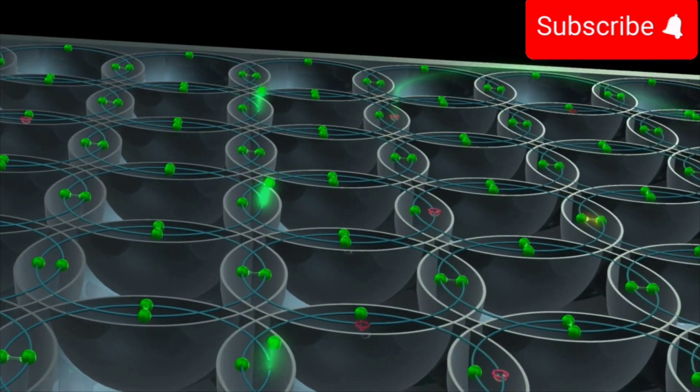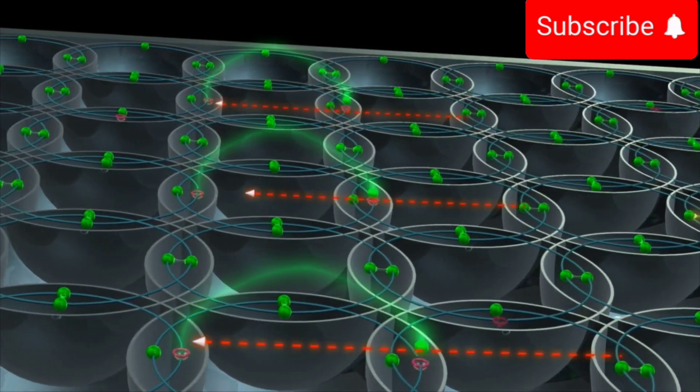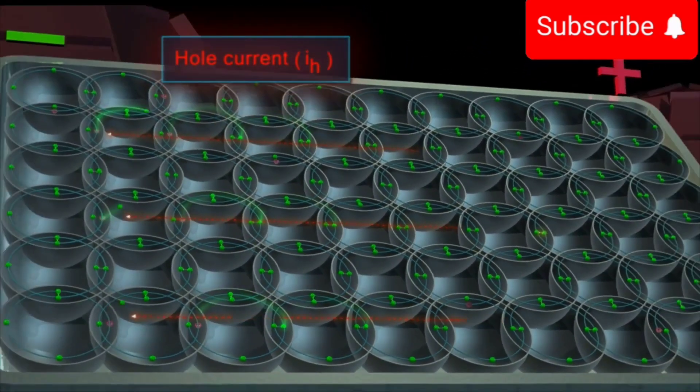At the same time, the adjacent valence electrons move into holes, effectively moving the holes towards the negative terminal of the battery, giving rise to the hole current (Ih).